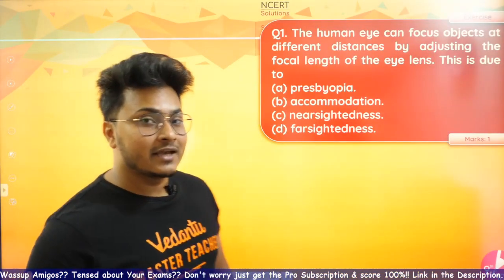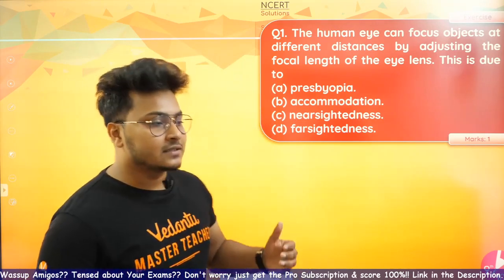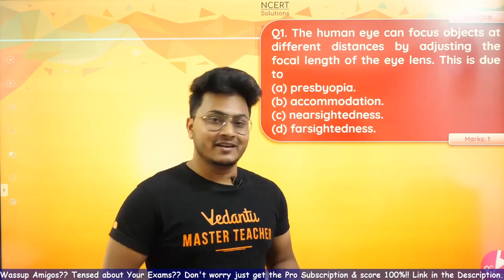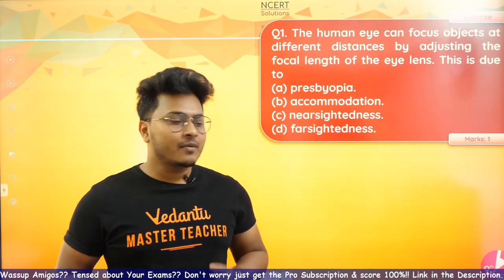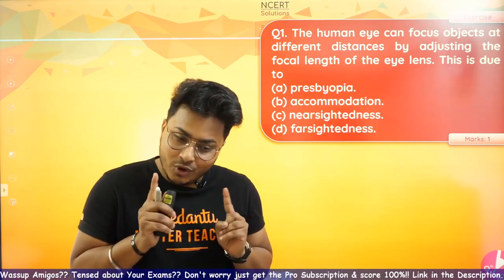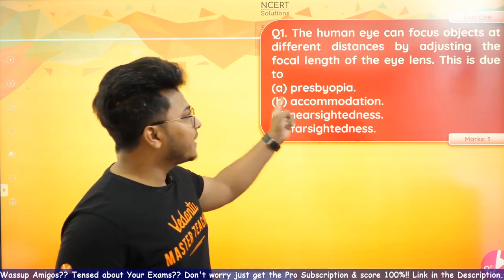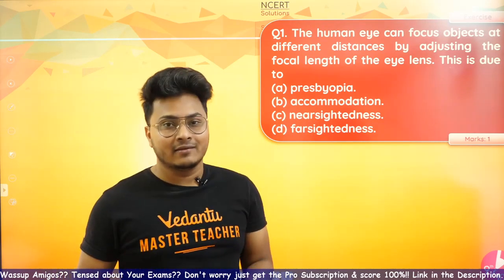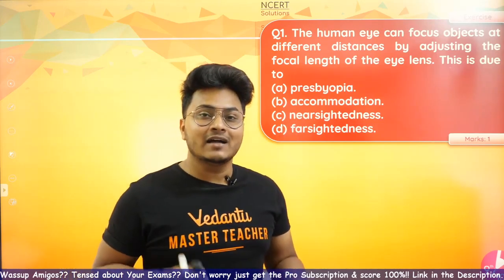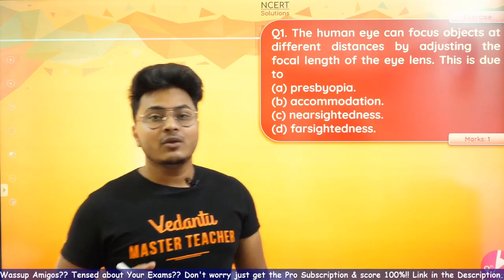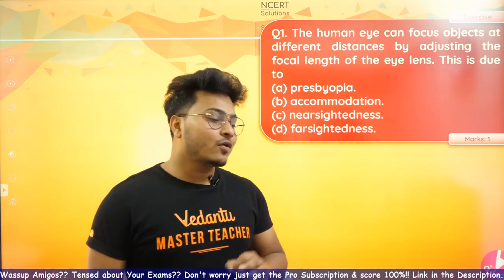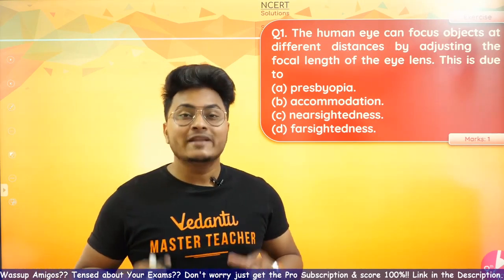The first exercise question for Human Eye is: 'The human eye can focus objects at different distances by adjusting the focal length of the eye lens. This is due to: presbyopia, accommodation, nearsightedness, or farsightedness.' Using the theory of elimination — presbyopia is a defect, not a feature. Nearsightedness (myopia) and farsightedness (hypermetropia) are also defects of the human eye. So accommodation — the power of accommodation — is the only option that makes sense.